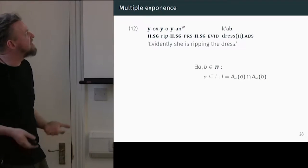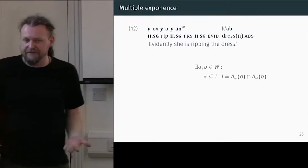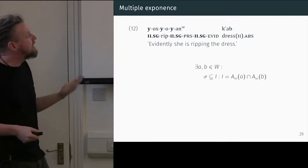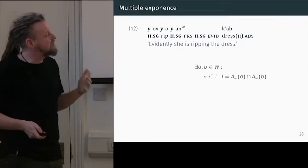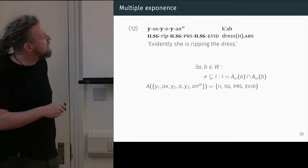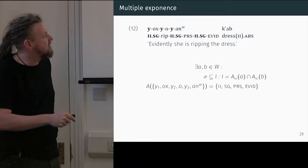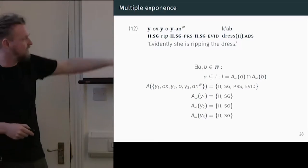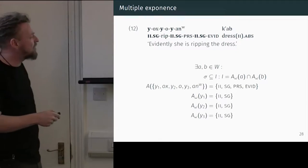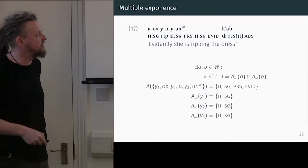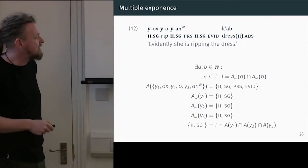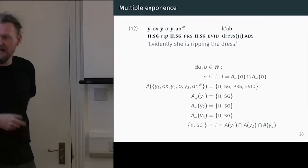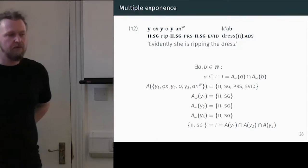We can go through and provide proofs that any given example is or isn't a case of multiple exponents. Here's our Batsby example — I'll go through this. Here is our word, which is a set of forms and features. Let's take any three at random from this word — the ones I know work. Each one of those is associated at the word level with the set of features gender two and singular. Since gender two and singular is the intersection of all of these elements, we know that both gender two and singular are examples of multiple exponents here. So we can prove whether or not a particular example counts.